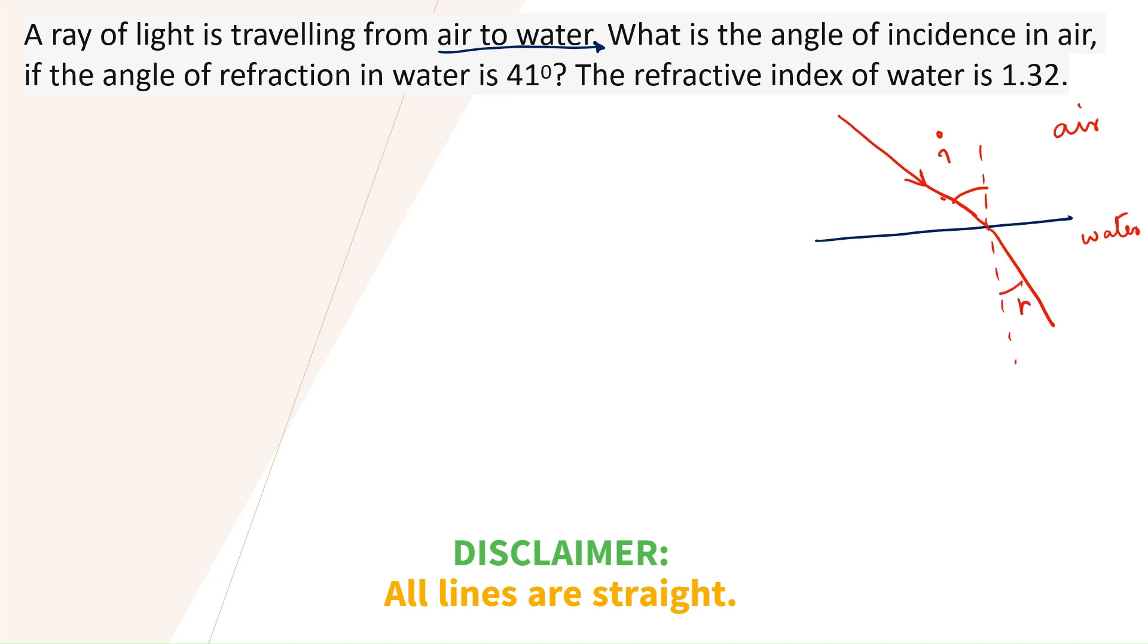So, r is how much? 41. The equation says, r is angle of refraction is 41 degrees. Refractive index of water with respect to air is 1.32. So, what do we do?